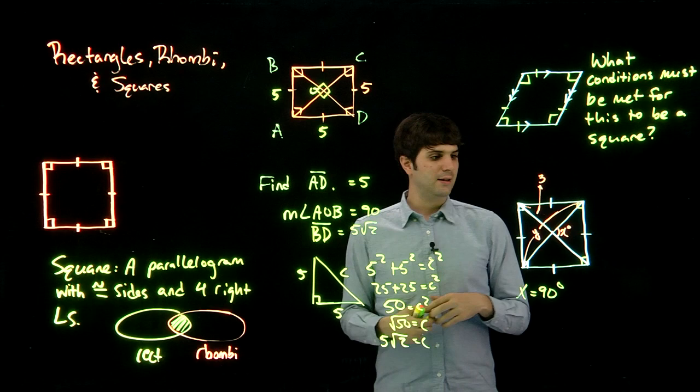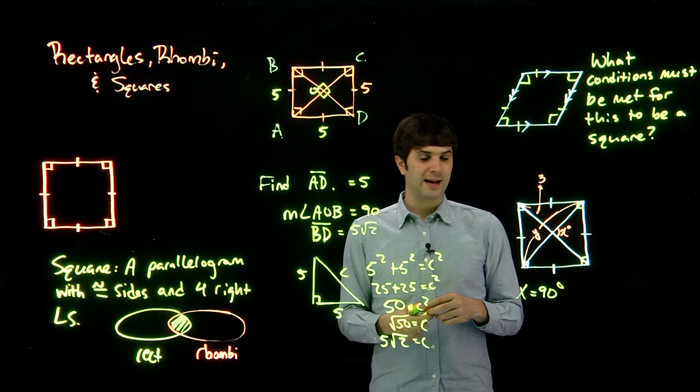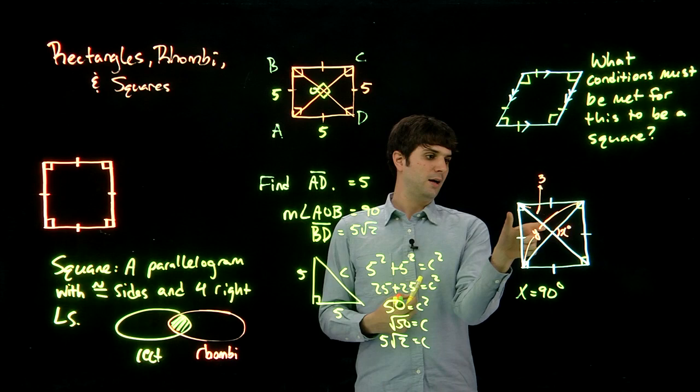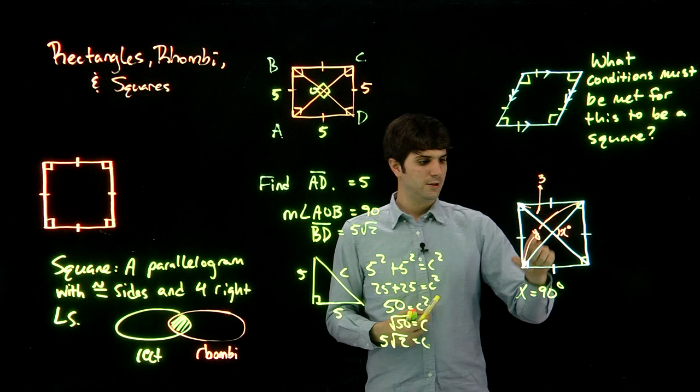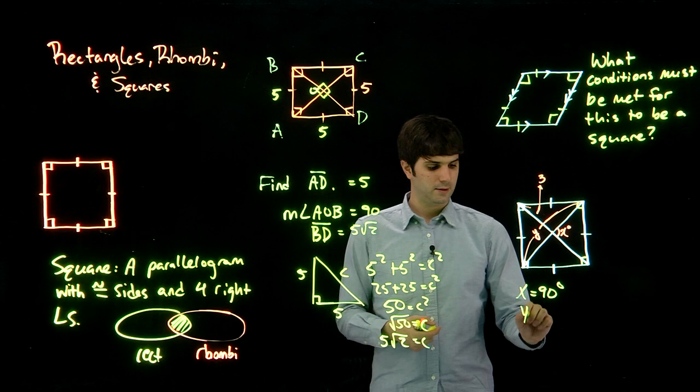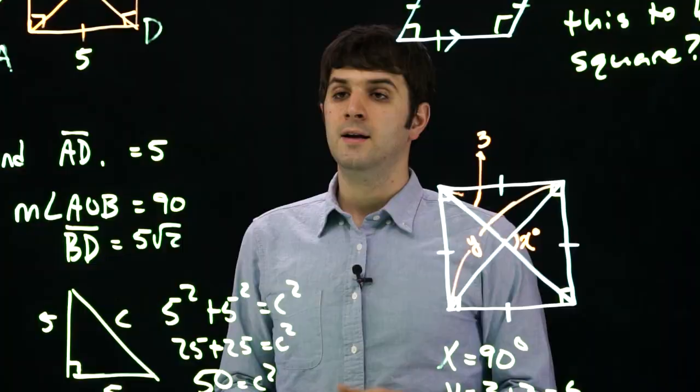Finally, what is y? Well, we know that diagonals in squares, diagonals in squares bisect each other. So if this section is three, that means this is three, this is three, and this is three. So if here is three, and here is three, then three plus three, y equals three plus three, which equals six.